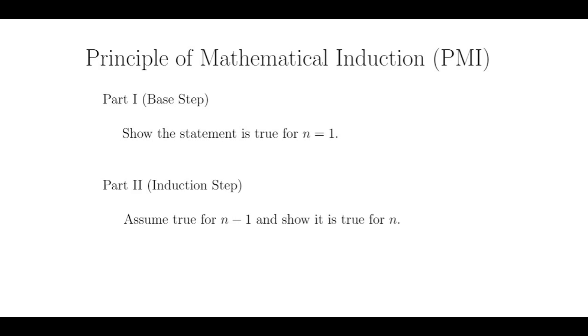Basically, if I have a theorem that I want to show is true for any positive integer n, I can prove it in two parts. For part 1, I will need to show that it is true for my base case, which is usually when n equals 1.